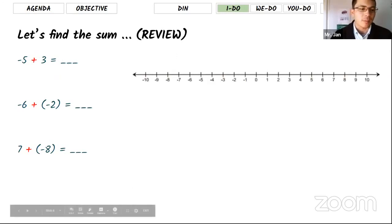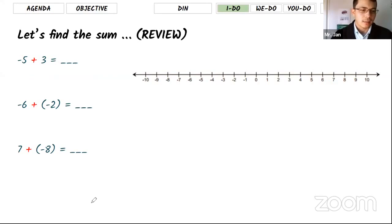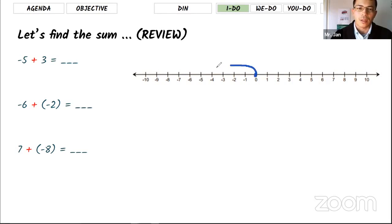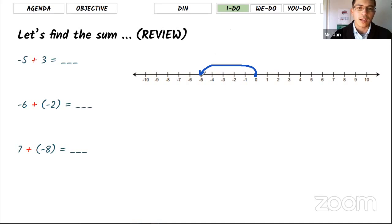When we add these numbers on the number line, my first number is negative five. Starting at zero, I find negative five — that's my first step. The second number is positive three, which means you start at the end of the first arrow — at negative five — and move three steps forward to the right. Your final destination is the result of the addition.